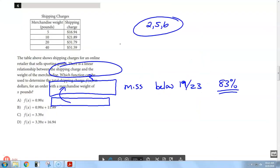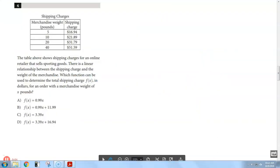Number four, I have a little chart here with shipping charges. It's linear. It says the table above shows shipping charges for an online linear relationship. Which function can be used to determine the total shipping based on the pounds? So this side is our x. These are our pounds. This side is our f of x. Or if you like to think of it as a y, that's okay too.